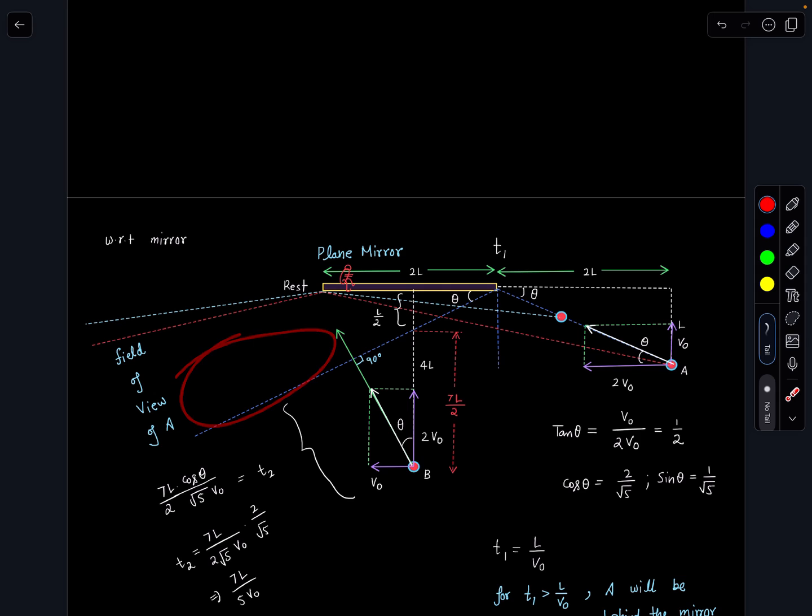Similarly, if you observe person B with respect to the mirror, this becomes 2V₀ and this becomes V₀ in the opposite direction. One more thing you have to take care of: T1 is L by V₀, and beyond L by V₀ the person will be behind the mirror and no such images can take place, so they definitely cannot see each other using the mirror.